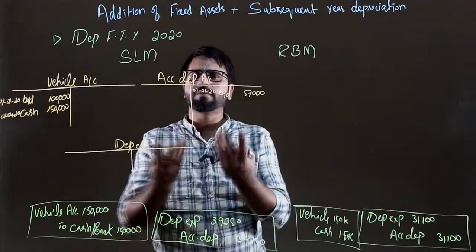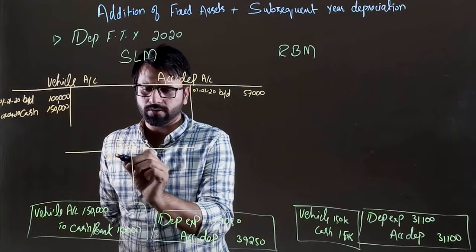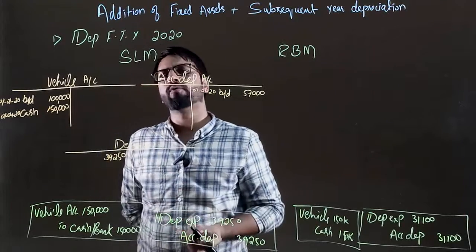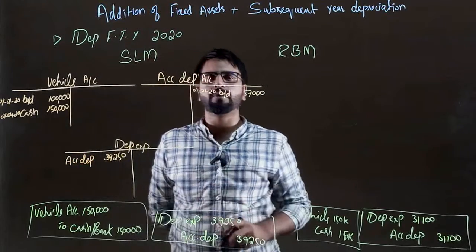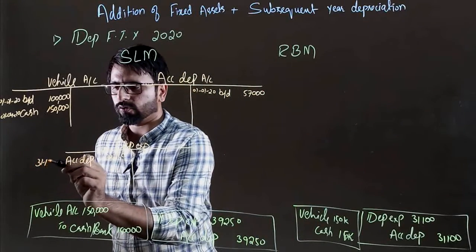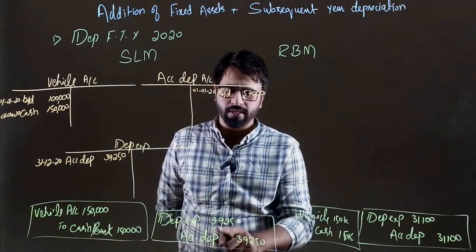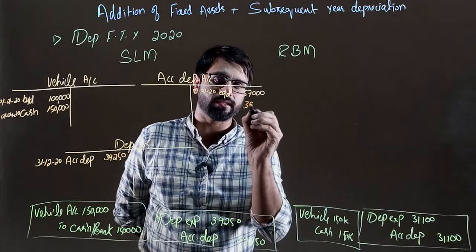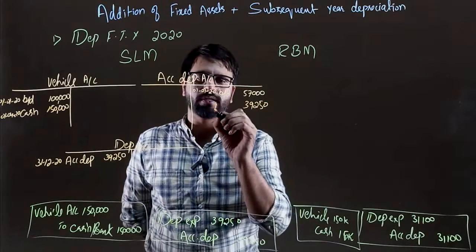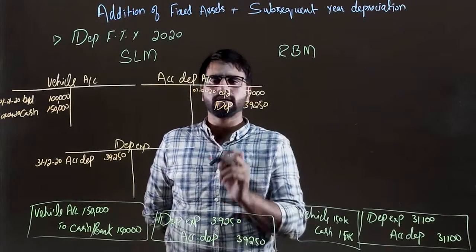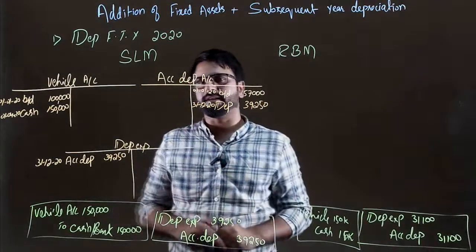The journal entry is simple. Depreciation expense debit 39,250 — here the entry is posted. Why debit? Accumulated depreciation — why? The entry date is year end: 31/12/2020. Debit posted, credit posted. Accumulated depreciation credit on the credit side. Credit depreciation expense due to depreciation expense.